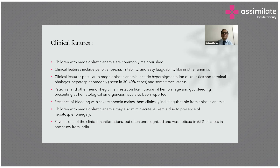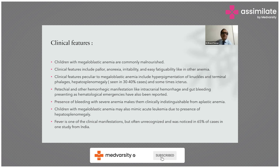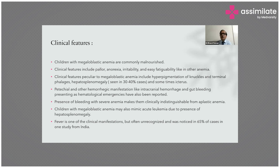Hepatosplenomegaly is seen in 30 to 40 percent of cases, and sometimes petechiae and other hemorrhagic manifestations like intracranial hemorrhage and gut bleeding presenting as a hematological emergency are reported. The presence of bleeding with severe anemia makes these cases clinically indistinguishable from aplastic anemia.